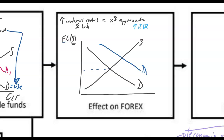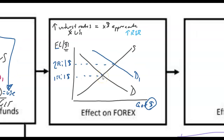Originally one foreign currency would buy one dollar. Now, because demand has gone up, it takes two foreign currencies to buy one dollar. The U.S. dollar has appreciated because now the U.S. dollar can buy twice as many foreign currencies as it used to. Another way to say it: the foreign currency has depreciated. So the U.S. dollar is appreciating.